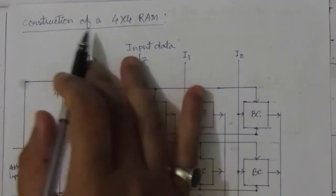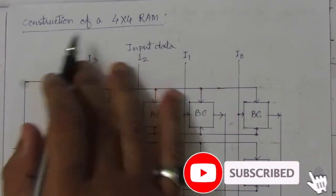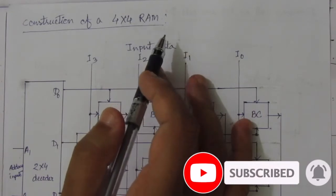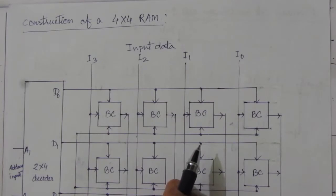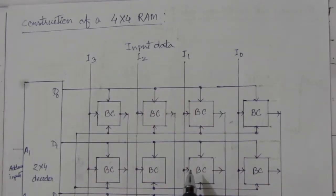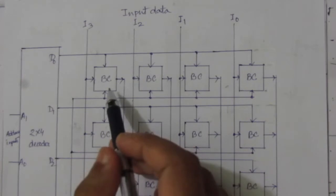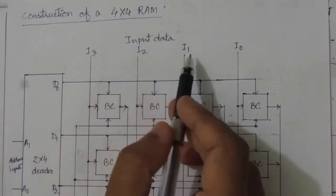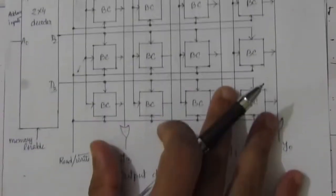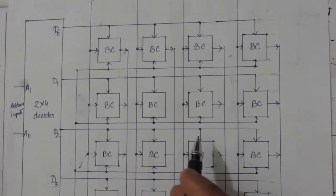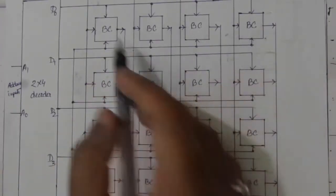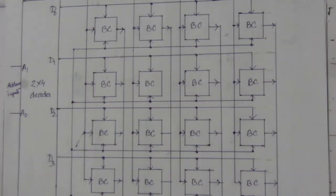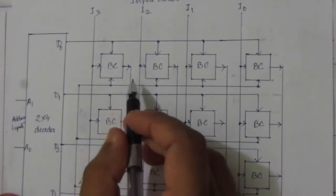In this video we will see the construction of a 4x4 RAM. If you are asked to design or explain the construction of a 4x4 RAM, this will be the solution. Here we have the 4x4 RAM with binary cells, four parallel input bits (I3, I2, I1, I0), and four outputs. It is called a 4x4 RAM because it has four columns and four rows of binary cells.